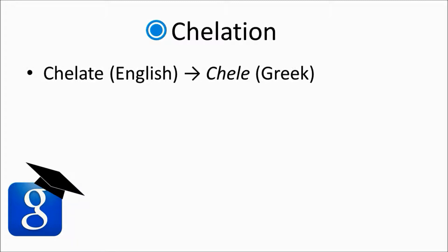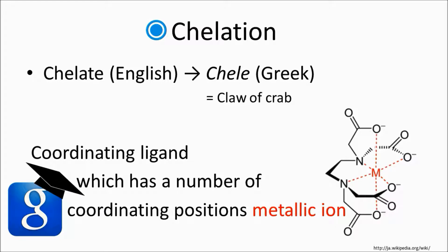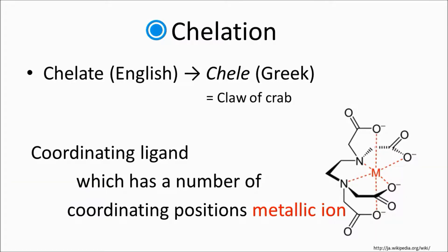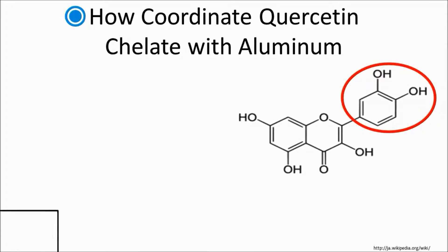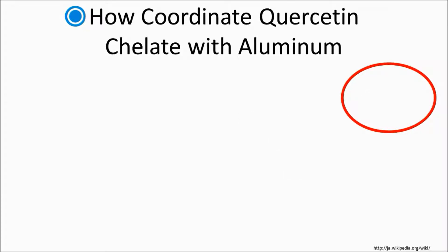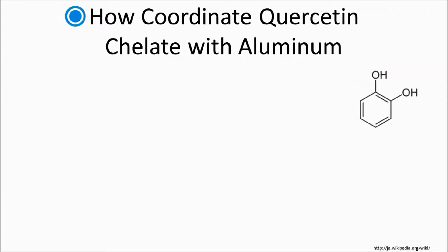Next, I would like to tell you about chelation. The origin of chelate is 'chele', which means a crab claw in Greek. It means a coordinating ligand which has a number of coordinating positions, like a metallic ion nipping ions with its claws. In this study, quercetin coordinates aluminum. Chelate complex, called chelation, is characterized by being more stable than a single coordinating position one. It's called the chelation effect, and I think it is very useful to dye metal. Let's see how chelation coordinates with aluminum. Chelation has catechol, and this catechol coordinates aluminum. Catechin also has catechol, so anthocyanin, which has catechol, and catechin may coordinate in a similar way.